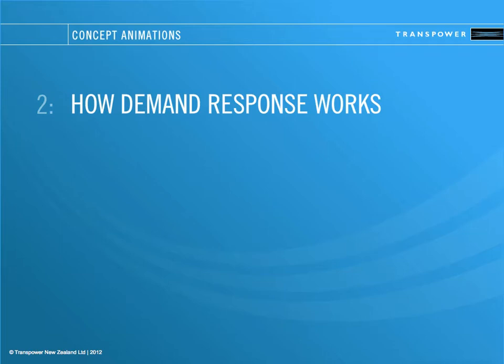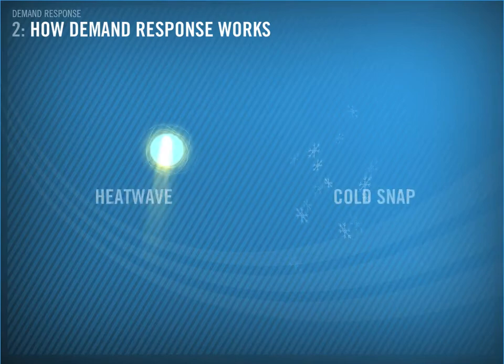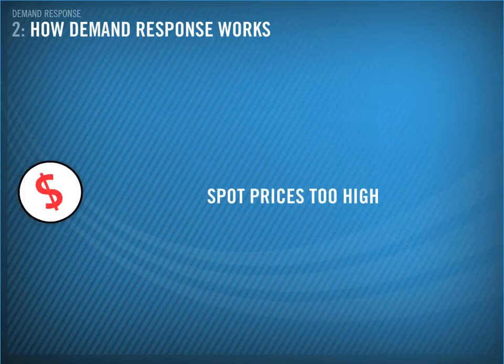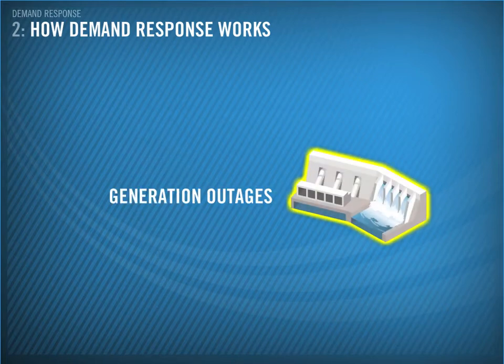Demand response can assist in managing different conditions in the power system. It could be used because, say, there is a heat wave or a cold snap, spot prices are starting to go sky high, or there are generation outages.